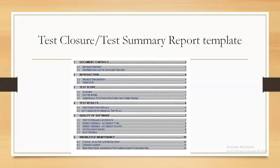The test summary report also covers: in-scope and out-of-scope testing activities, additional features tested, test results, test execution details such as cycle 1 execution pass and fail counts, variance to original test plan, quality of software, test coverage and results, defect metrics by defect type and defect status, outstanding issues, exit criteria, knowledge maintenance, causal analysis and resolutions, lessons learned, best practices adopted, and new implementations. This document is prepared by the test manager.